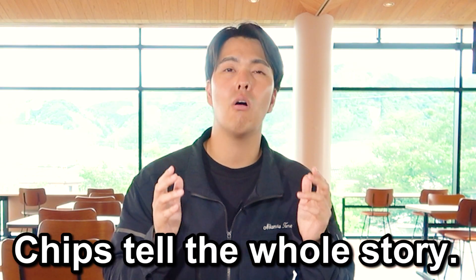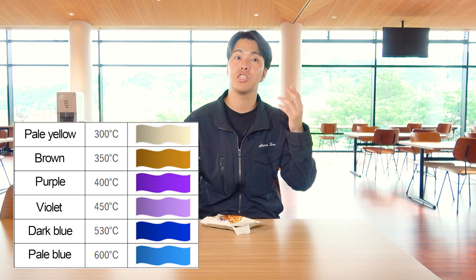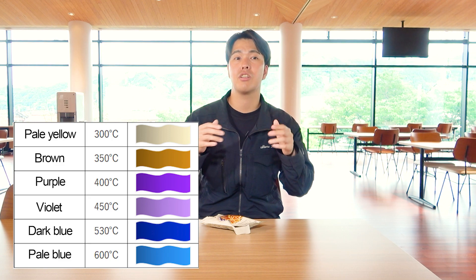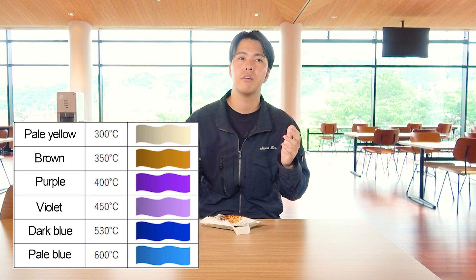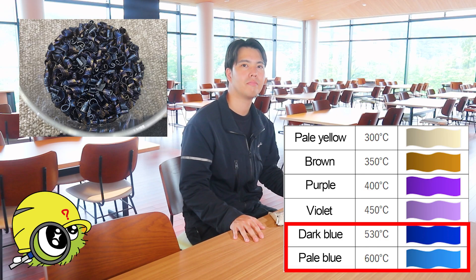And one more thing — chips tell the whole story. Actually, you can guess how the machining process is going by looking at the state of chips. Let's take a look at this diagram. This chart shows the relationship between chip color and cutting temperature for steel-based materials. You can see that as chips turn blue, the cutting temperature is also getting higher. Here are chips from a 6mm depth of cut at the MEX Kanazawa exhibition. Does that mean it could have been 500 degrees Celsius or higher? That's right — it was heavy-duty cutting with no coolant.